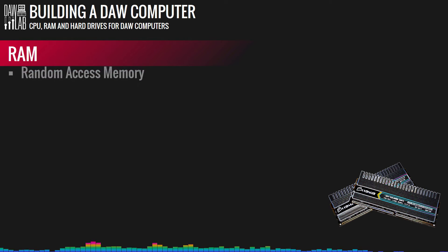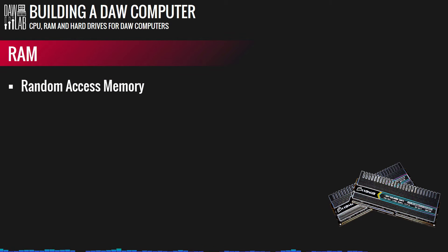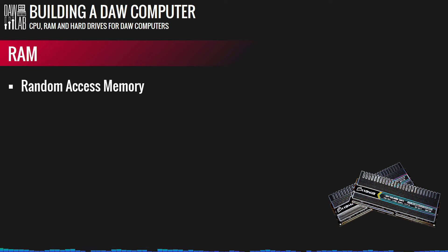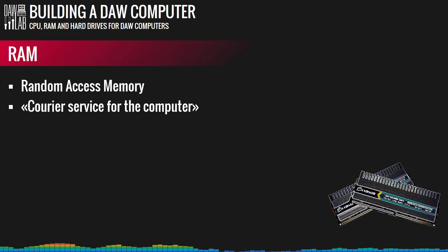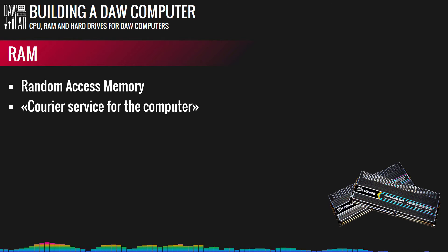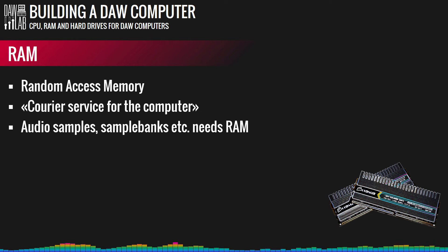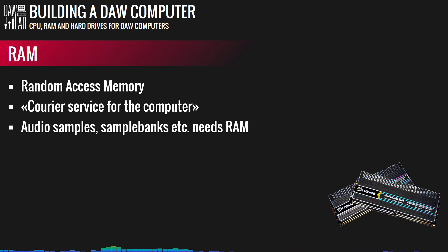Now let's talk about RAM — random access memory — which is simply the memory store of the computer. This is probably the most important part after the CPU. Think of RAM as a small, super-fast courier service between the hard drive and the processor. Modern music production relies heavily on sample banks, virtual instruments, and audio loops — basically anything that uses audio samples requires a decent RAM.